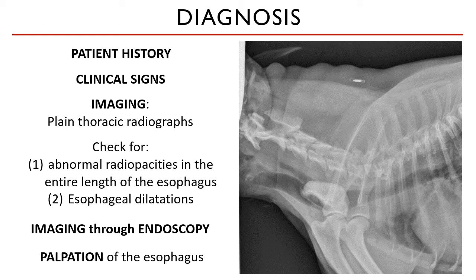Another simple diagnostic method is palpation. Palpate the ventral neck of the animal — there should be only one palpable firm tube there, which is the trachea. If you can feel another structure, the cervical esophagus may contain a foreign body. However, you cannot know exactly what you palpated without further diagnostics — it could be a foreign body, a mass, or a cyst on the esophagus itself. It's best to supplement with other diagnostic methods available.